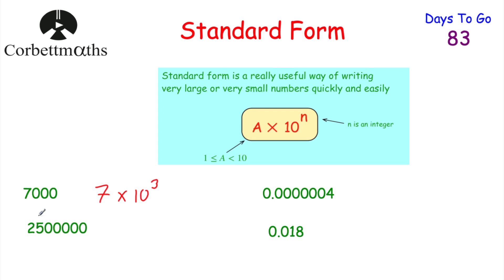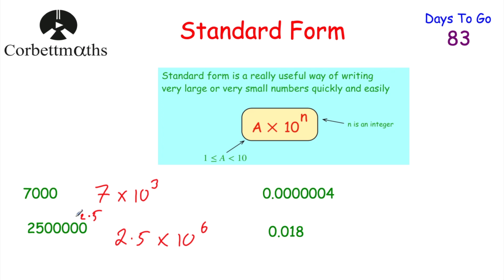Next, 2,500,000 in Standard Form. We need a number between 1 and 10, so we choose 2.5. Starting from 2.5, we need to move the digits 6 columns to the left to reach 2,500,000. So it's 2.5 × 10⁶. To recap: consider how many columns you need to move the digits to the left — here that's 6 — and that gives you the power.